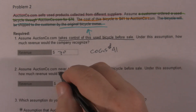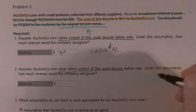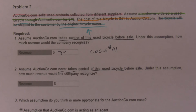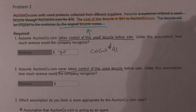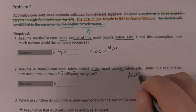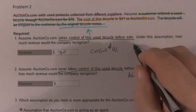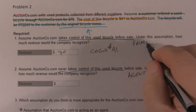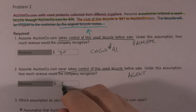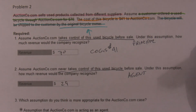Now, assume they never take control of this bicycle, so the bicycle never comes to them — they never have the bike in their possession, they never run the risk of loss or damage. In this case, they're acting as an agent, and they should recognize $29 worth of revenue.